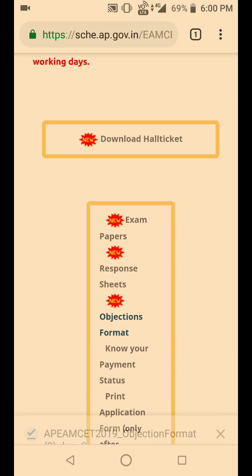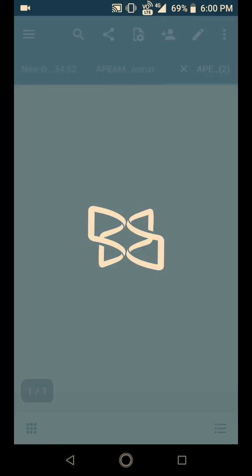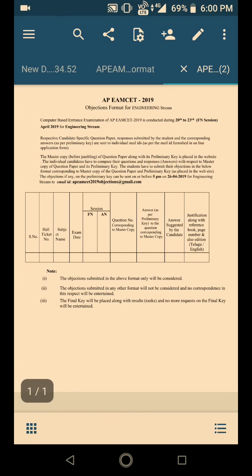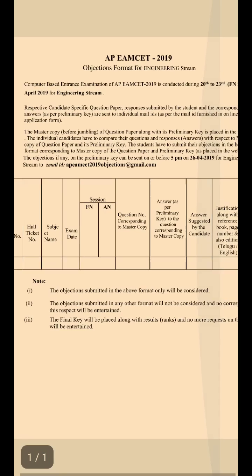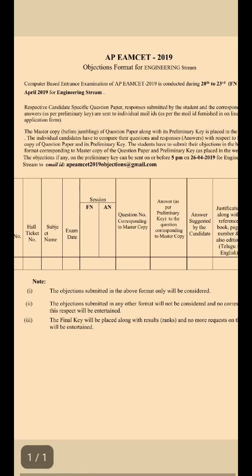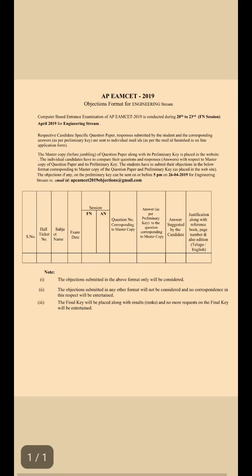Open the downloaded file. You have to submit your objection on or before 26th April before 5 PM only. The email ID is apmz2019objection@gmail.com. The objection must be submitted in the provided table format only — they will not accept any other format.